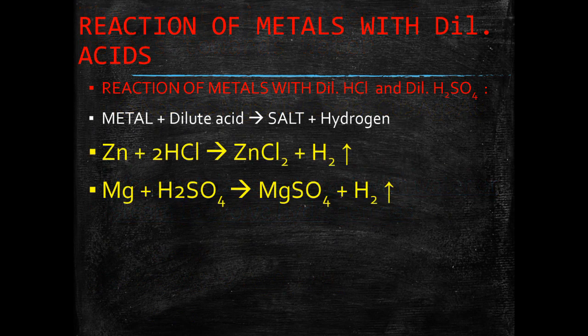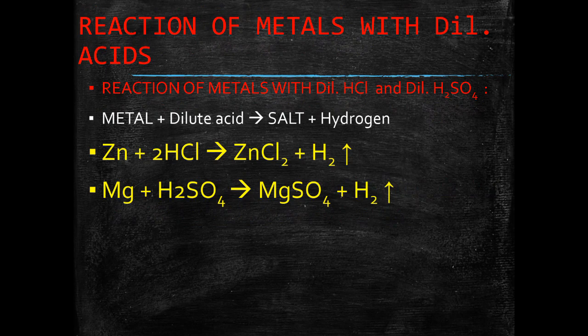Now our next chemical property of metals is reaction of metals with dilute acids. First, we learn about the reaction of metals with dilute HCl and dilute H2SO4. Except a few less reactive metals such as copper, mercury, silver, gold, platinum, etc.